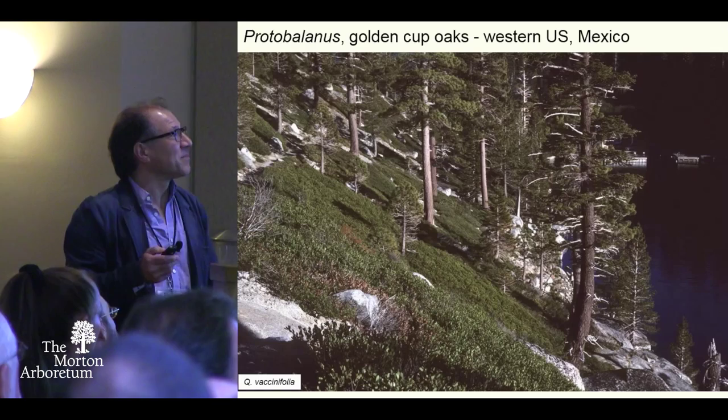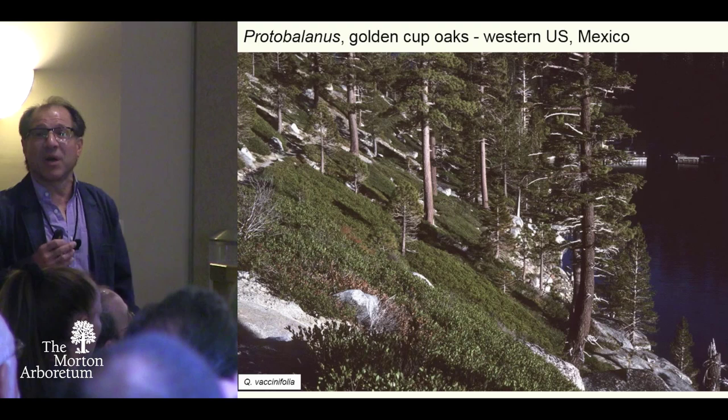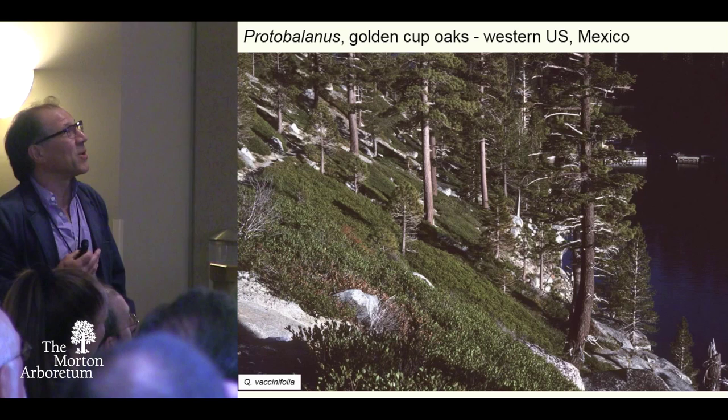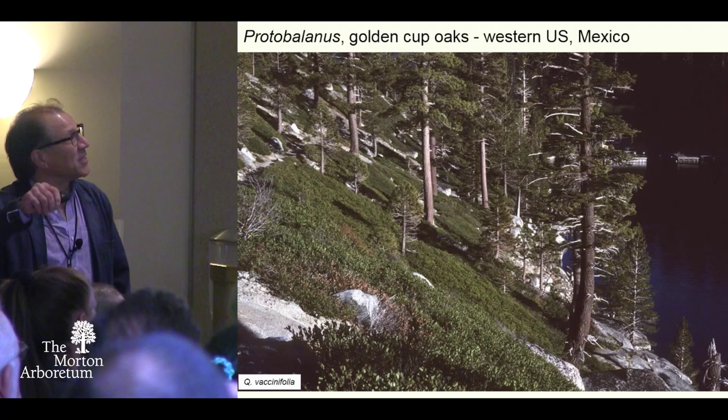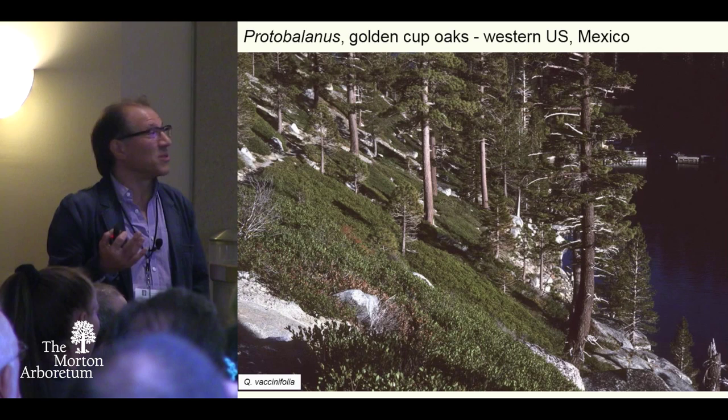Just a little introduction to get your blood flowing about oaks. Protobalanus — the golden cup oaks — we know them from western U.S. and Mexico. This is Quercus vaccinifolia, which is mostly under deep snowpack during the winter months and spring, as much as six to eight feet of snowpack. That's the huckleberry oak — a low-growing Quercus shrub.